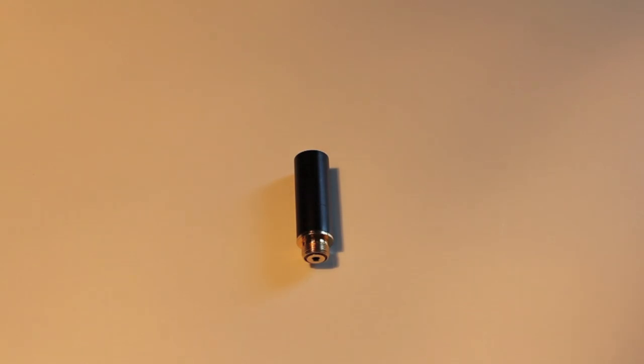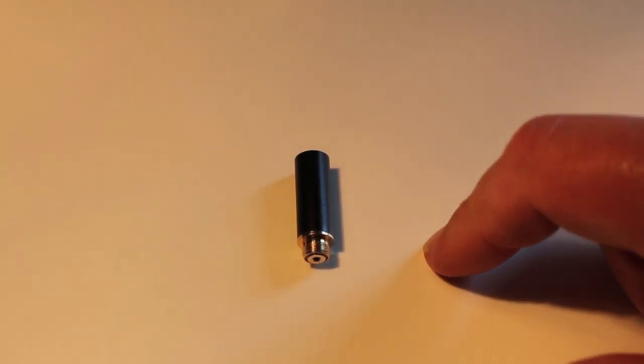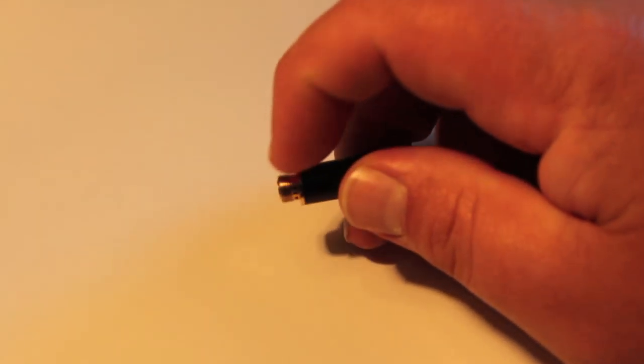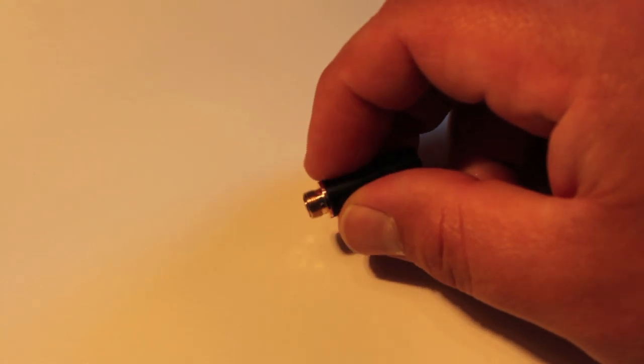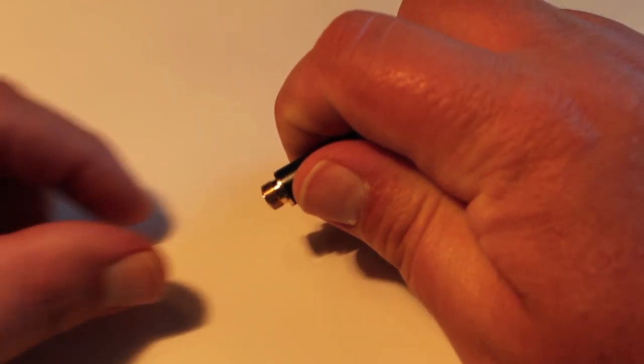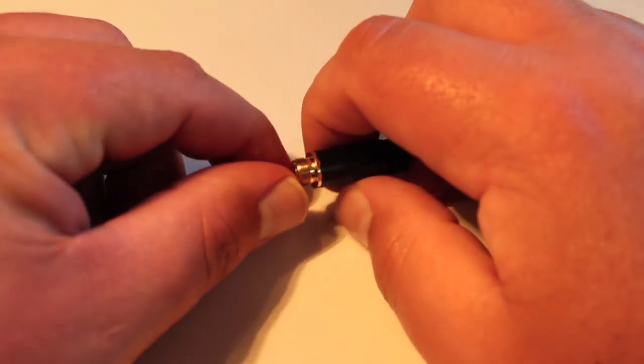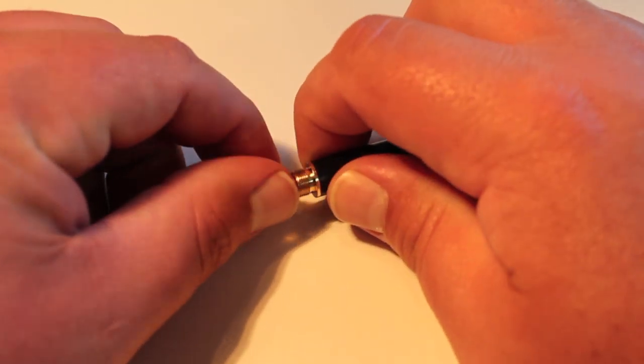But there you go, that's an atomizer. And just like everything else, they have different threadings. This one's a 510 connection. It comes in 801, 901, 401, 510. They're all different sized threads. So you got to make sure you get the atomizer that fits your equipment.